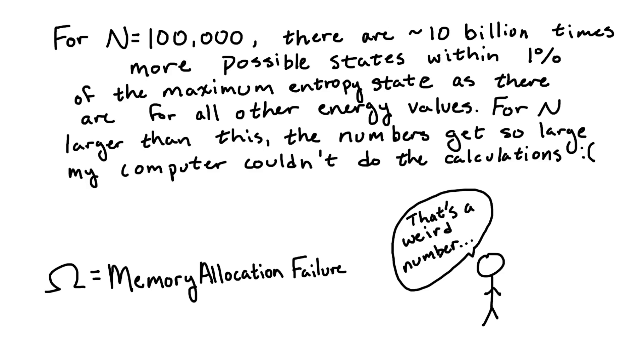As one could imagine, for systems with, say, n equals 10 to the 23rd, the likelihood of finding the system in any state other than the highest entropy states is so astronomically small, it might as well just be zero.